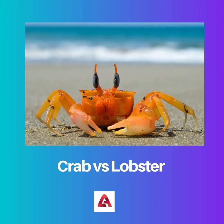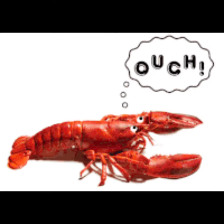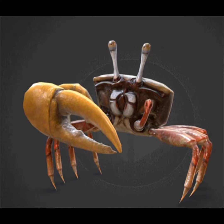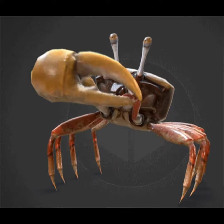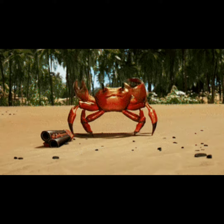Body shape and size. Crabs have a wide, flattened body with a cephalothorax (fused head and thorax) and a segmented abdomen. They typically have a sideways walking motion due to their broad, laterally flattened bodies. Lobsters have a long, cylindrical body with a segmented abdomen and a distinct cephalothorax, giving them a more elongated shape compared to crabs.